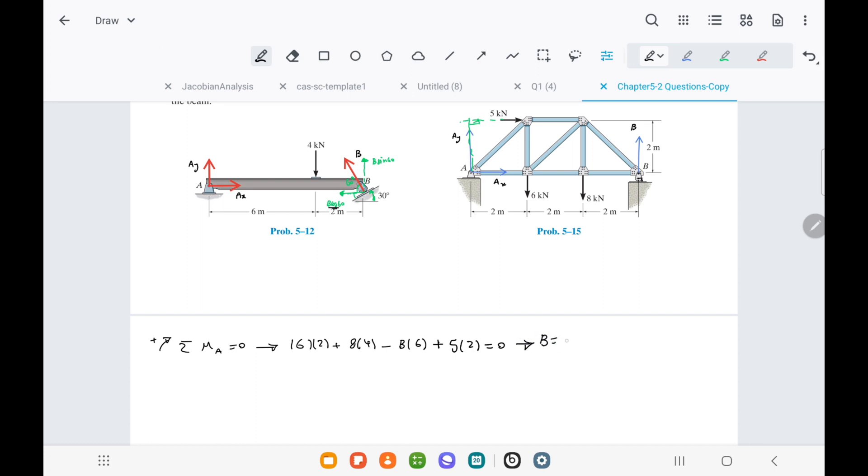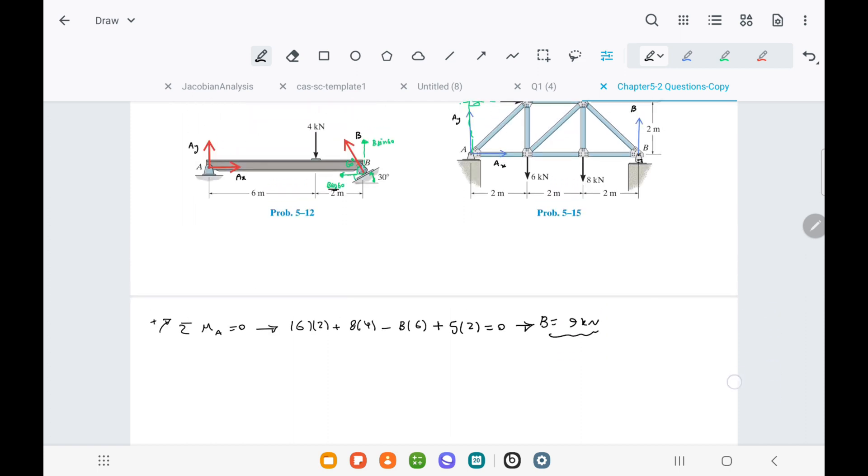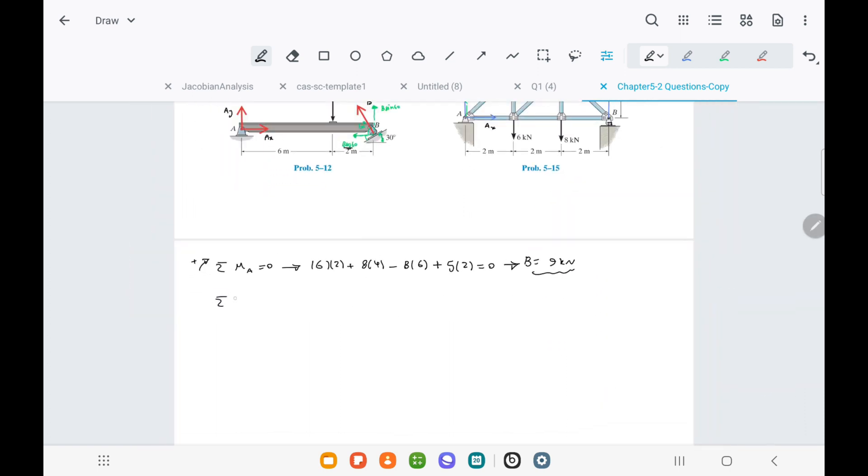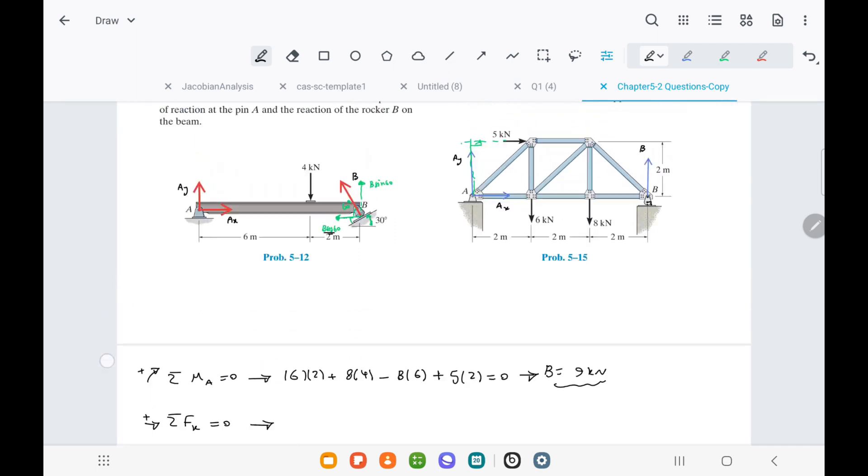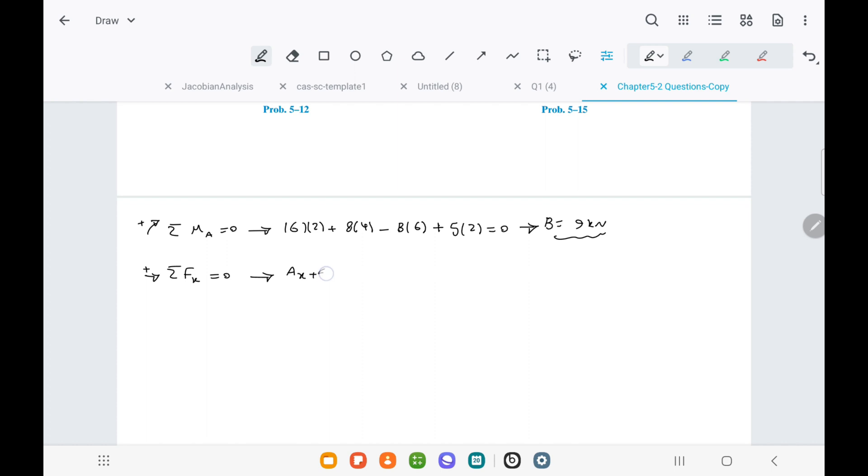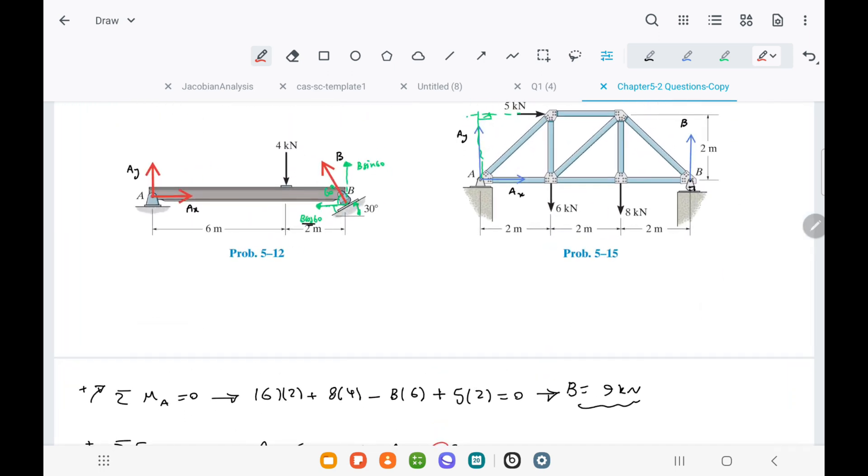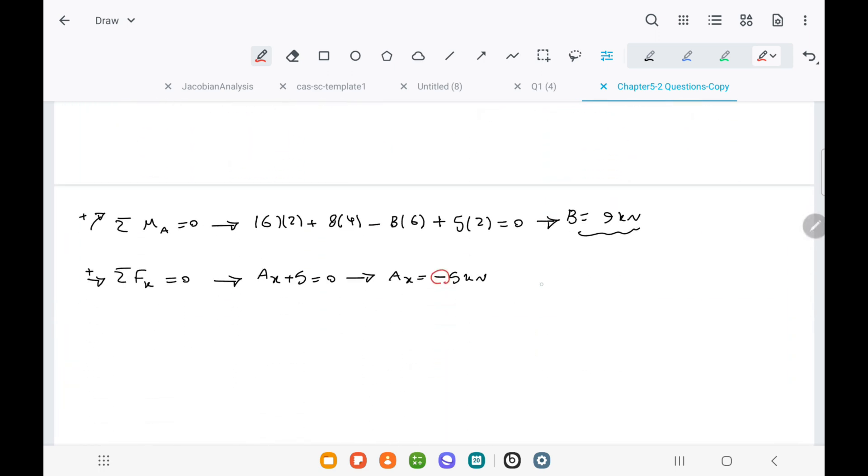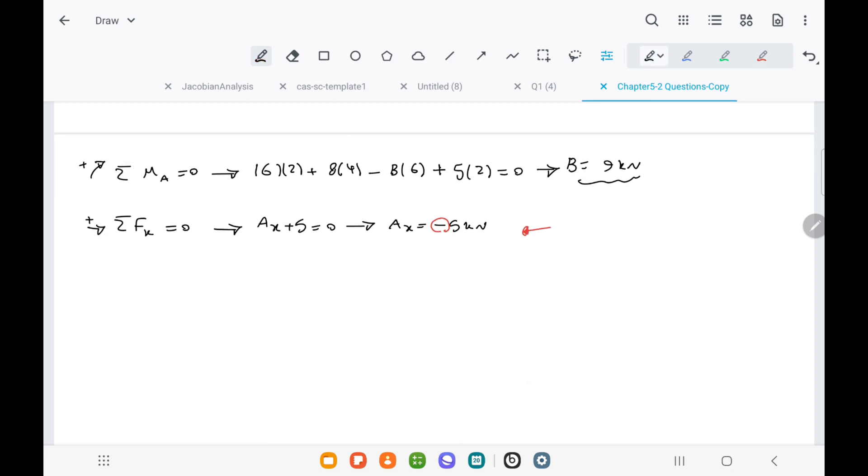Next, we can use the equation of sigma Fx, the sum of forces in the horizontal direction equals zero, to calculate Ax. Since the force in the horizontal direction is only the 5 kilonewton force, we can easily find that Ax equals negative 5 kilonewton. The negative sign indicates that the assumed direction initially was incorrect, and the correct direction is to the left.